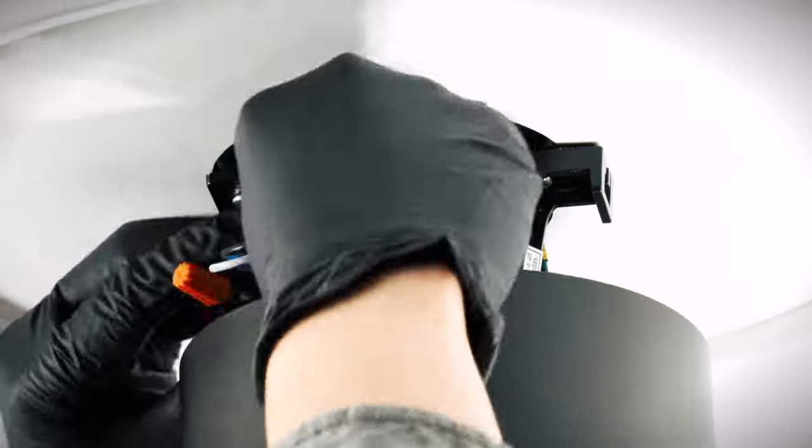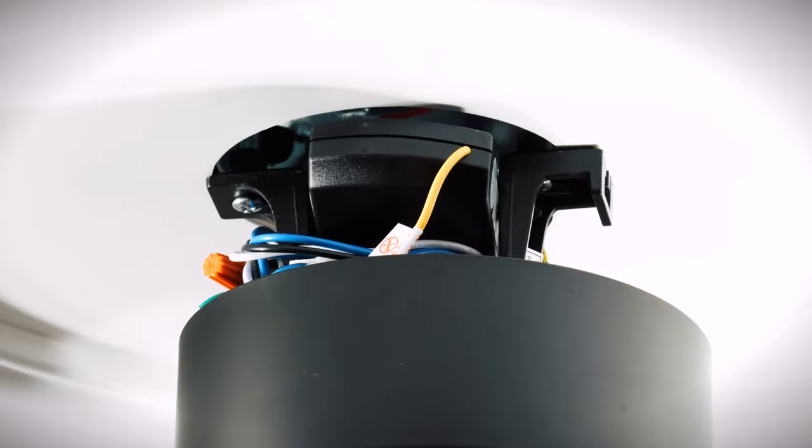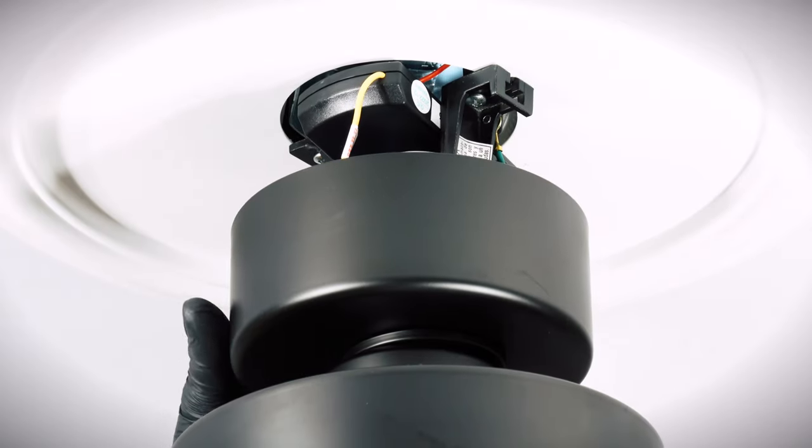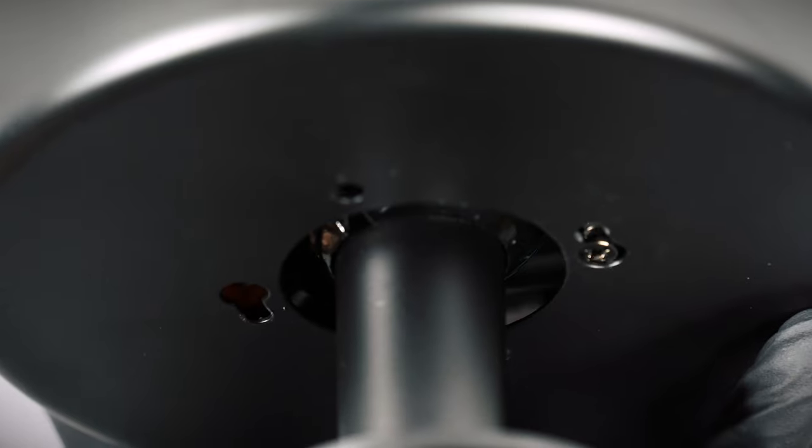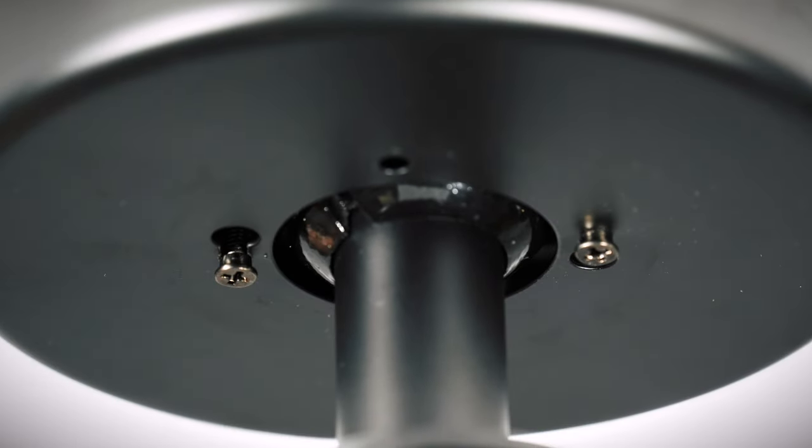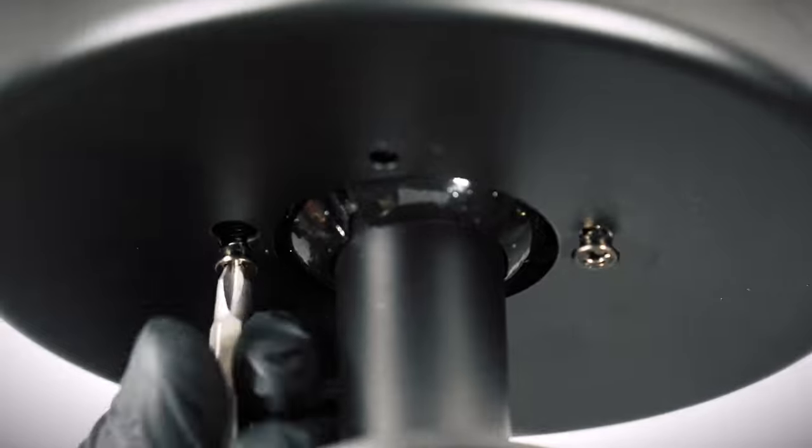Carefully tuck the connections up towards the ceiling box. Lift the canopy and align the keyhole slots with the mounting bracket screws. Twist to hold in place. Tighten both mounting bracket screws securely.